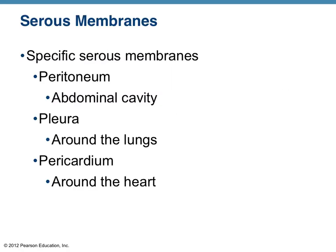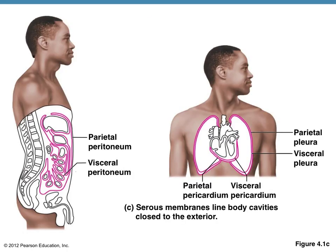These are specific serous membranes found in the body — ones you might encounter in reference. The parietal peritoneum versus the visceral peritoneum: the visceral peritoneum surrounds the organs, while the parietal peritoneum actually lines the cavity where all of those organs sit.